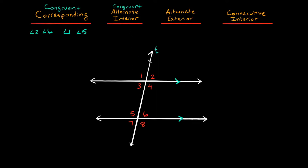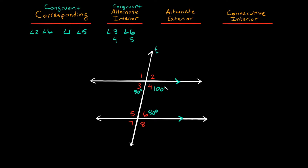When it says alternate, it's talking about on opposite sides of the transversal line, and in this case you have to go diagonally. So three and six would be alternate interior angles — angles three and angle six — and the other pair here would be angle four and angle five. And again, these would be congruent. So if angle three right here was 80 degrees, then this spot right here would also be 80 degrees. And over here, this four — if this was 100 degrees, then five would also be 100 degrees.